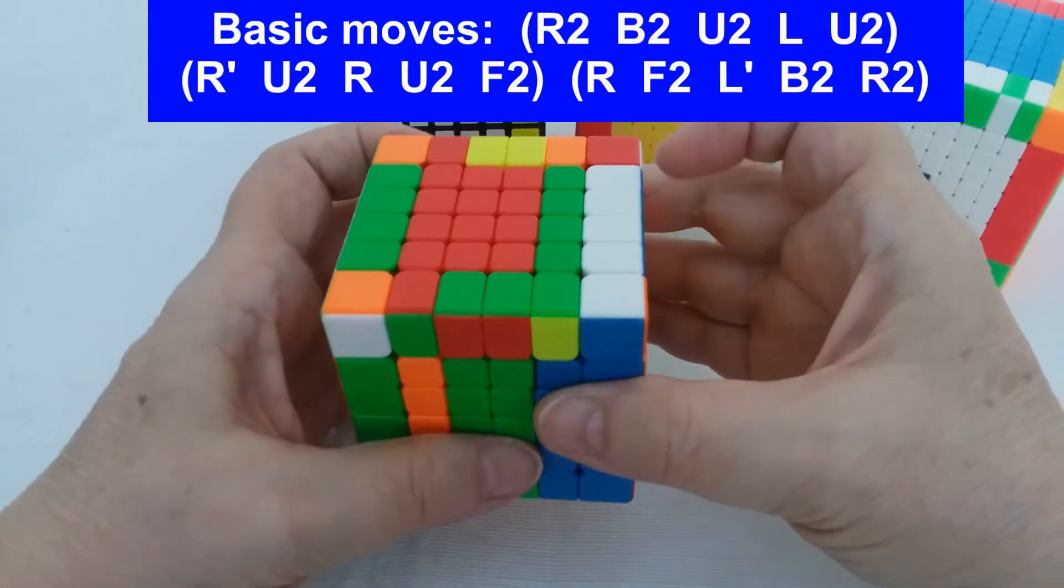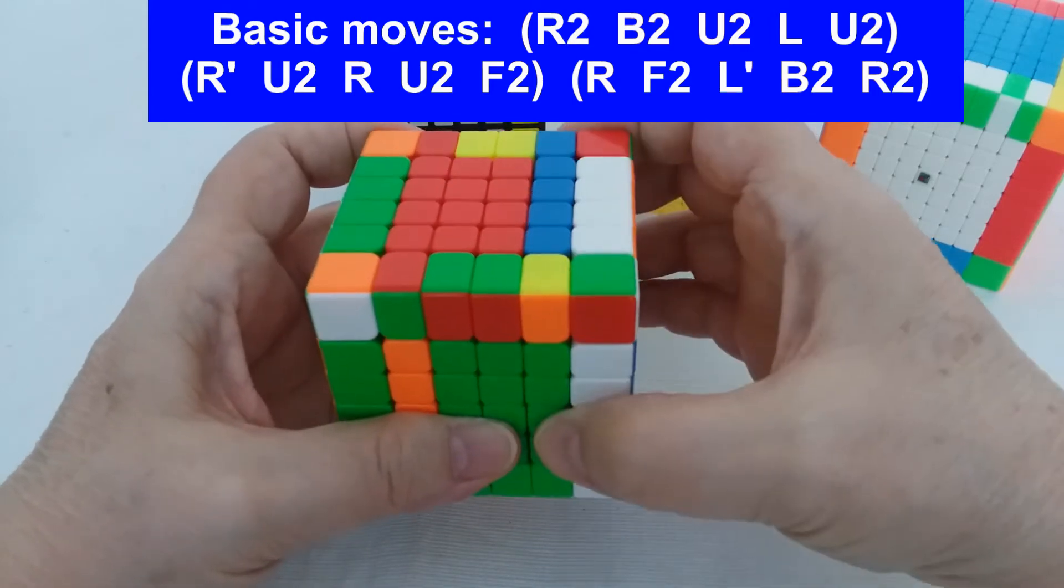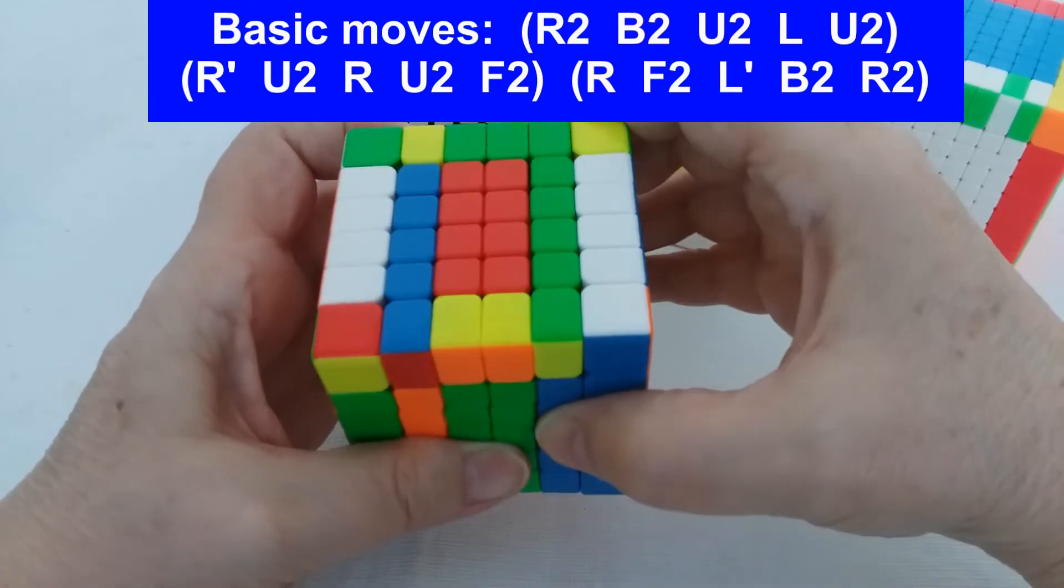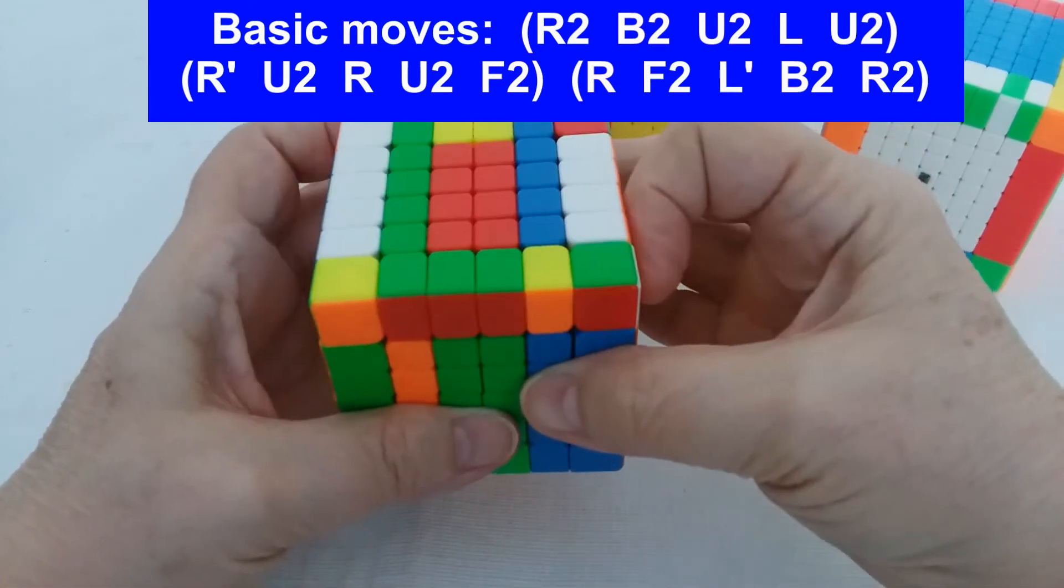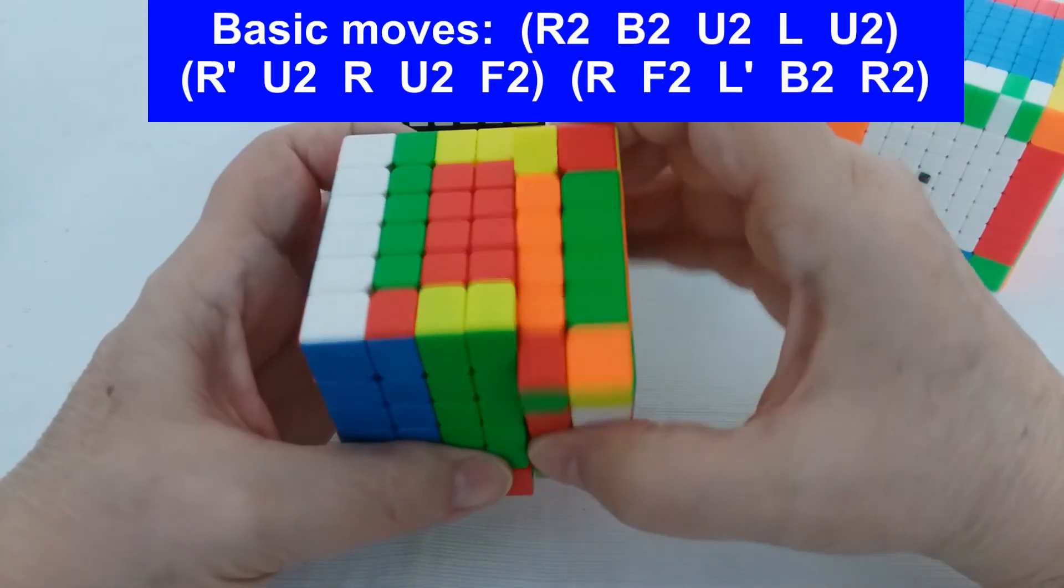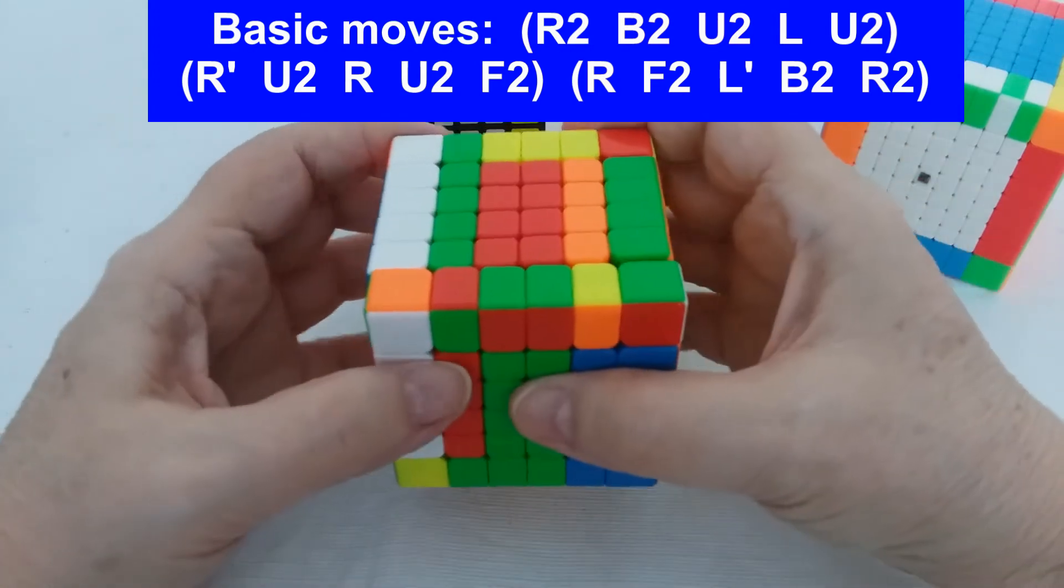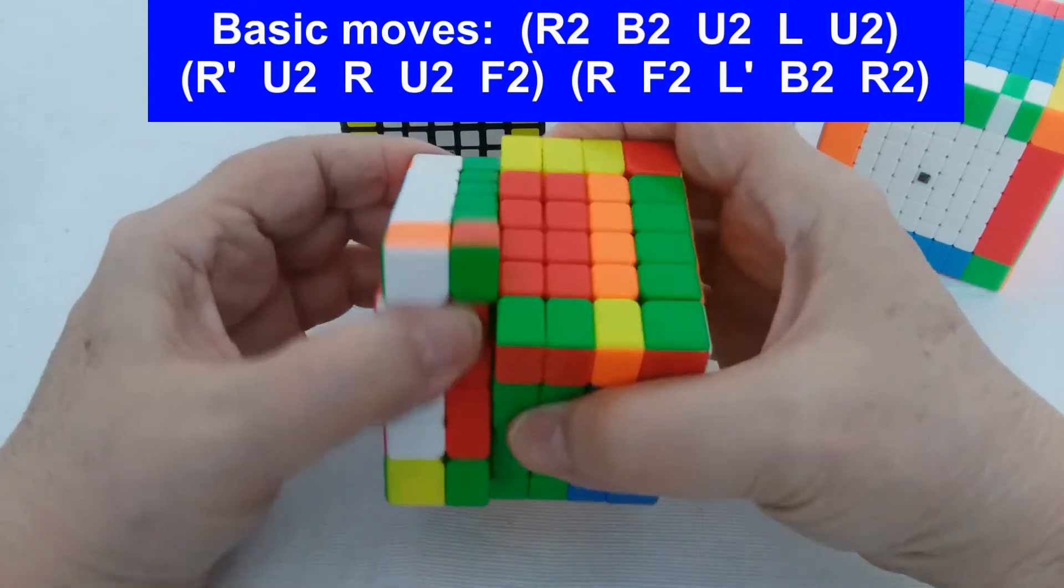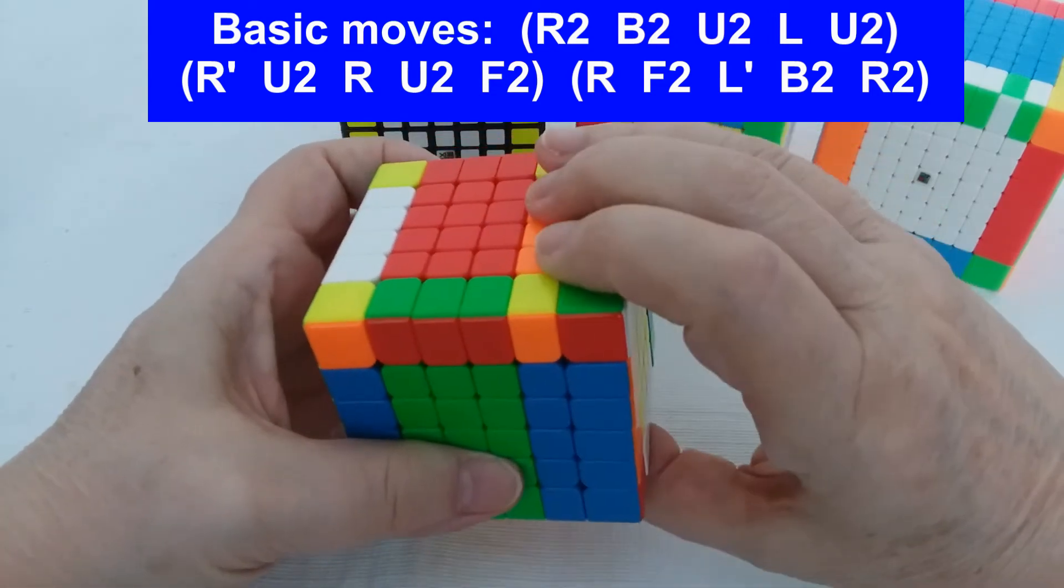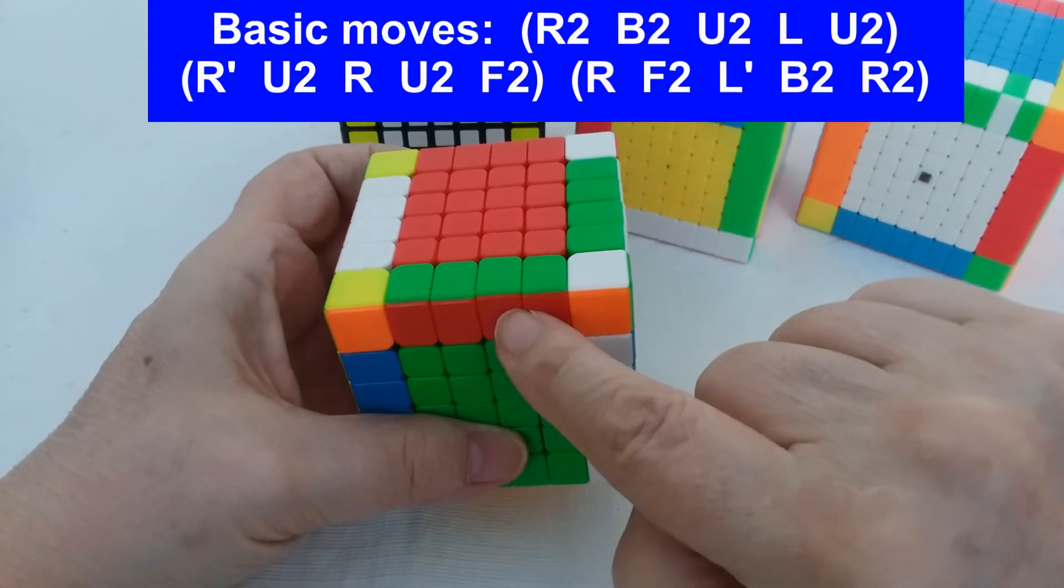Then we do R, which is the R wide prime really, R toward me, U2, R away which is R wide really, away, U2, and then an F2. And then the last five I think R back home, which is the R wide, F2. I think L back home, which is really an L wide prime, B2, and then R around twice, which is really the R wide around twice, and that has solved those.